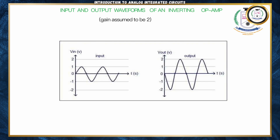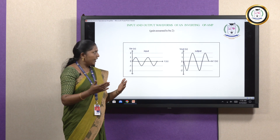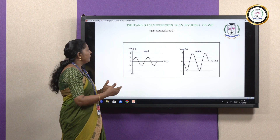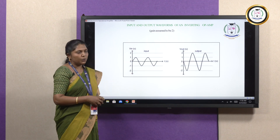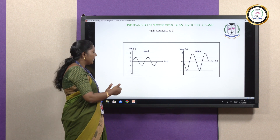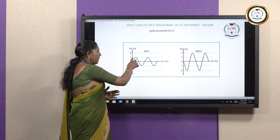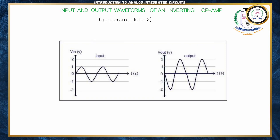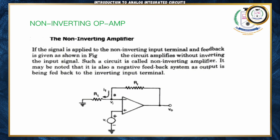This is the waveform of our inverting amplifier. The output voltage is amplified by a factor of 2 because the gain here is 2. At the same time, the phase is inverted — when you have a positive phase in your input, the output will be negative. So the output will be inverted as well as amplified.